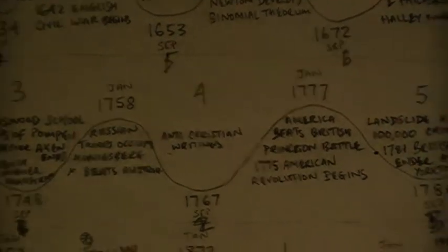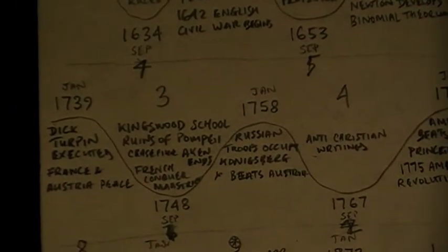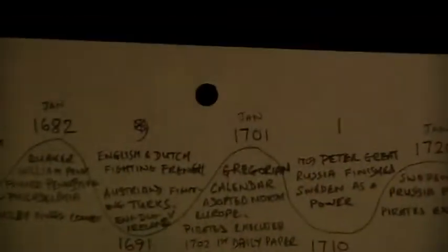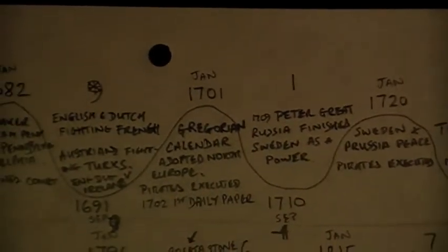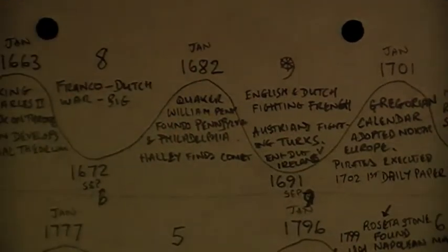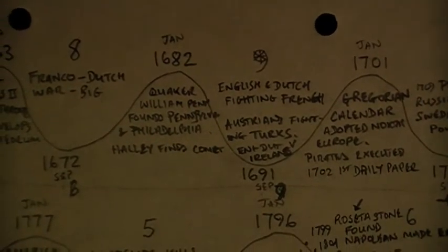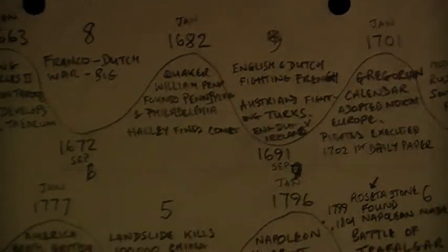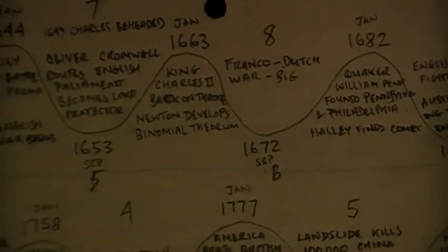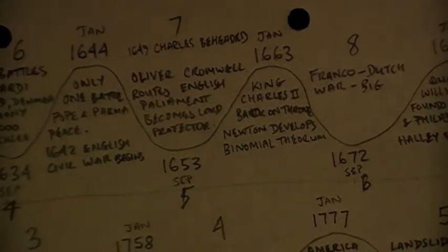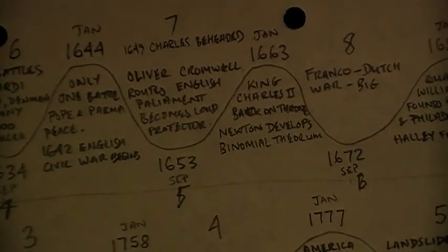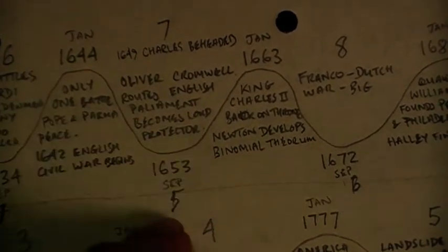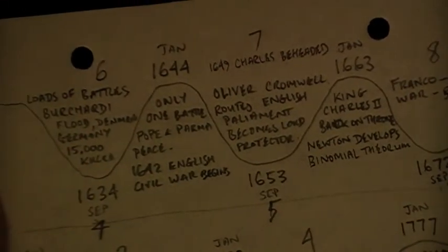For example — Dick Turpin executed, was that a good thing or a bad thing? English and Dutch fighting French, Quaker William Penn founds Pennsylvania. But the big one: Oliver Cromwell becomes Lord Protector in 1653. There are so many of them hitting the dates that it can't be ignored.